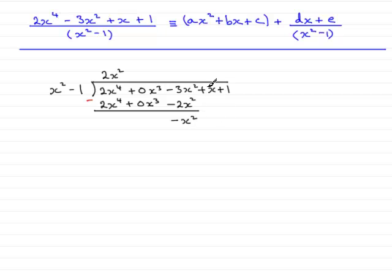Now I bring down the next term, so that would be plus x, bring it down into there. And I ask myself, what do I multiply x squared minus 1 by to get the minus x squared here? And it would be minus 1, because minus 1 times the x squared would give me this minus x squared.